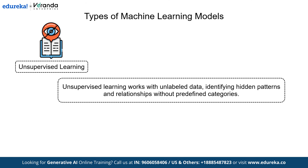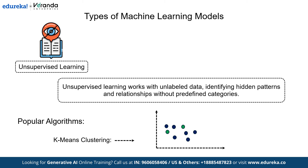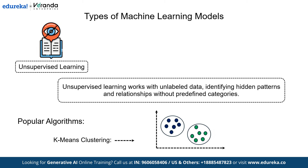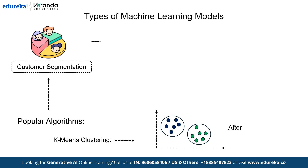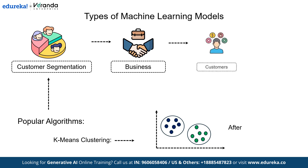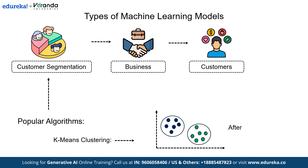Unsupervised learning works with unlabeled data, identifying hidden patterns and relationships without predefined categories. The first popular algorithm is K-means clustering. This algorithm partitions data into a predefined number of clusters by grouping similar data points based on their attributes. It works well for tasks like customer segmentation, where businesses can group customers based on purchasing behavior. However, it assumes clusters are spherical and may struggle with irregularly shaped data.